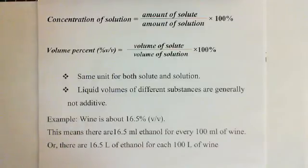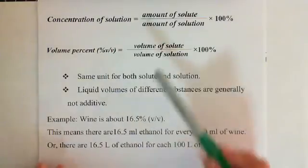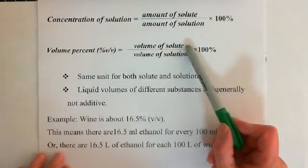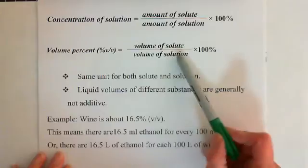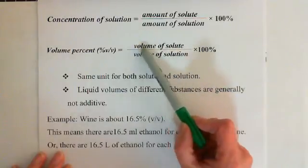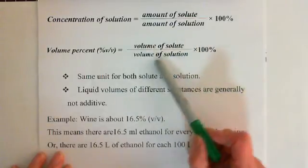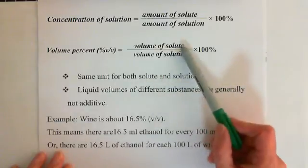Same unit for both solute and the solution. So as long as you have the same unit for solute and solution, and this is also after dividing each other, it is a ratio. So if volume of solute uses milliliters and volume of solution also uses milliliters, or volume of solute uses liters and volume of solution also uses liters — same unit for both solute and solution.